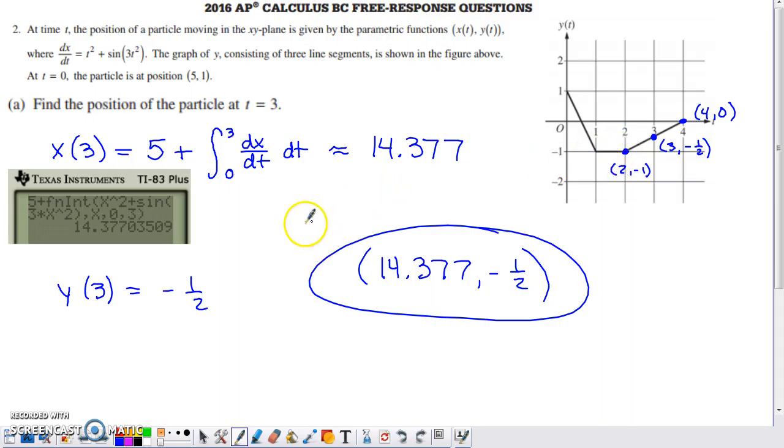If you check out part A, it asks for the position of the particle at time 3. To find the x component of position at time 3, you're going to take the x component at time 0, which is 5, and add on how much the x component of position changes from 0 to 3 by integrating the rate of change of the x component of position or integrating the x component of velocity. That's an integral you can do on the calculator, and you should end up with 14.377.